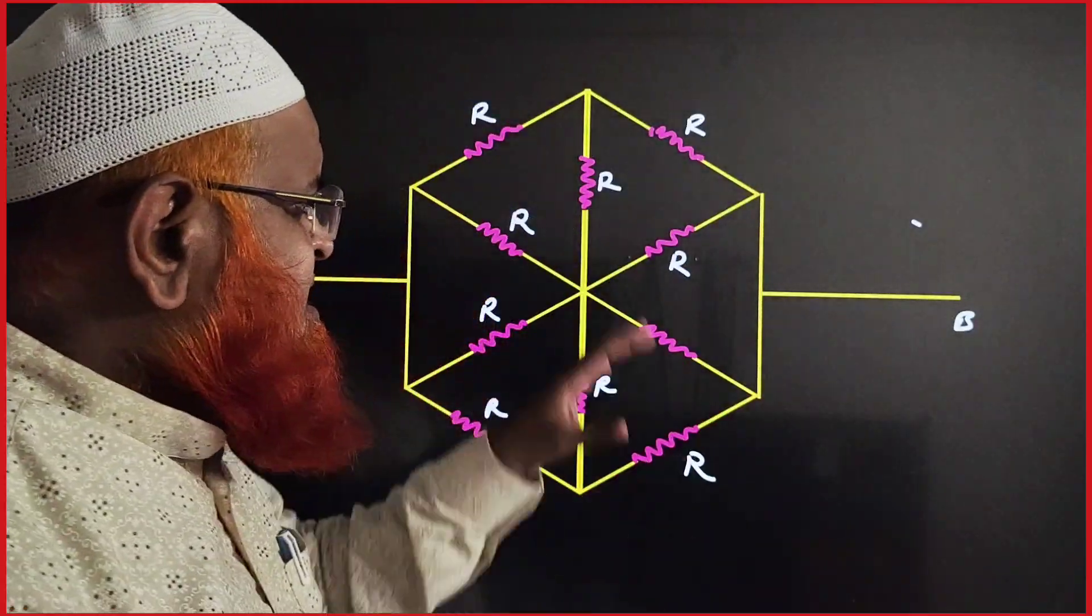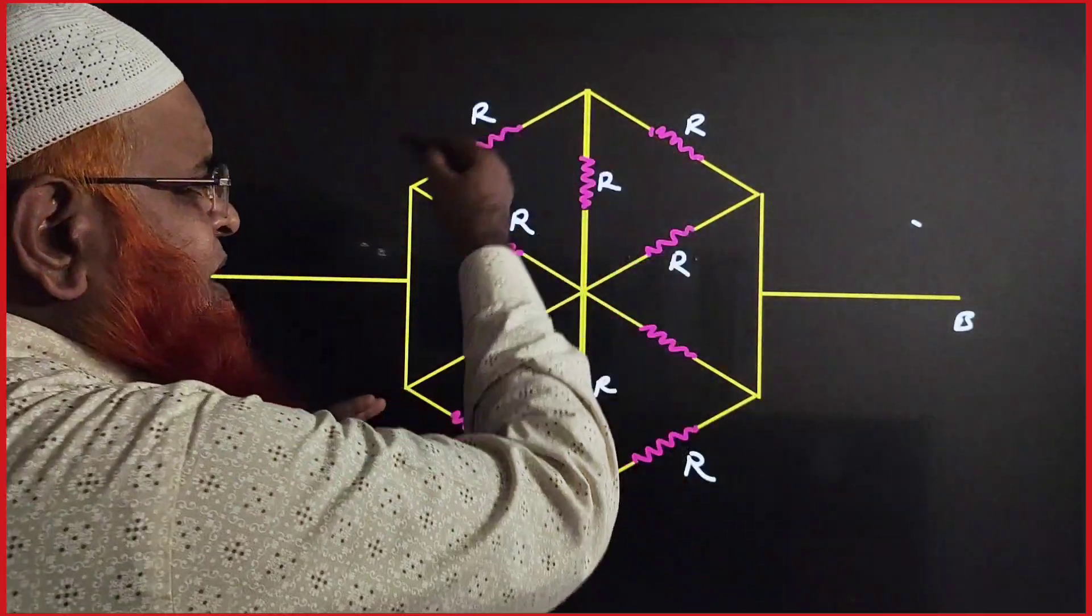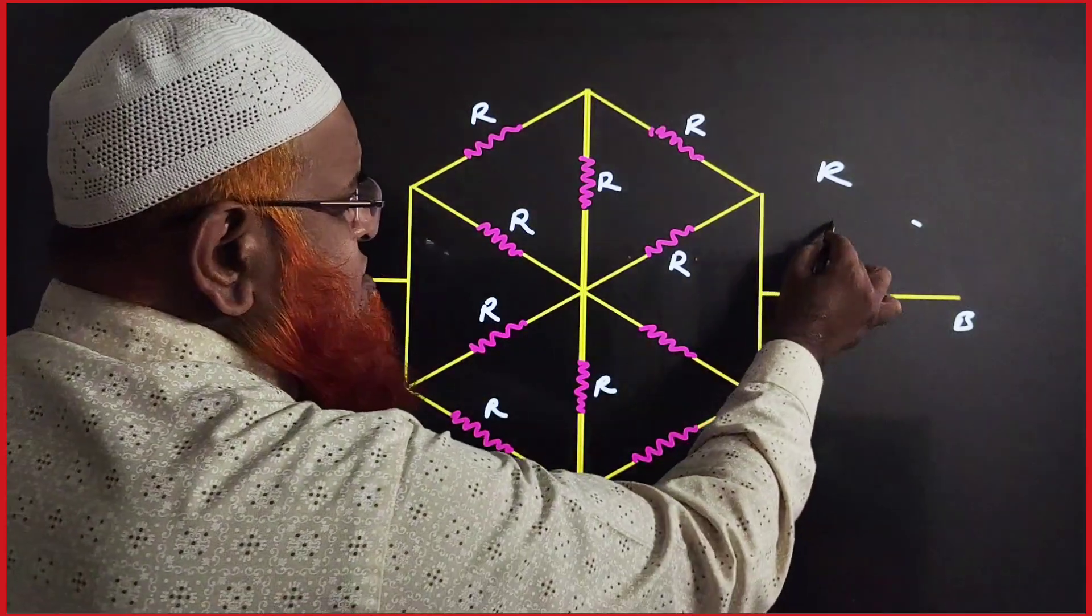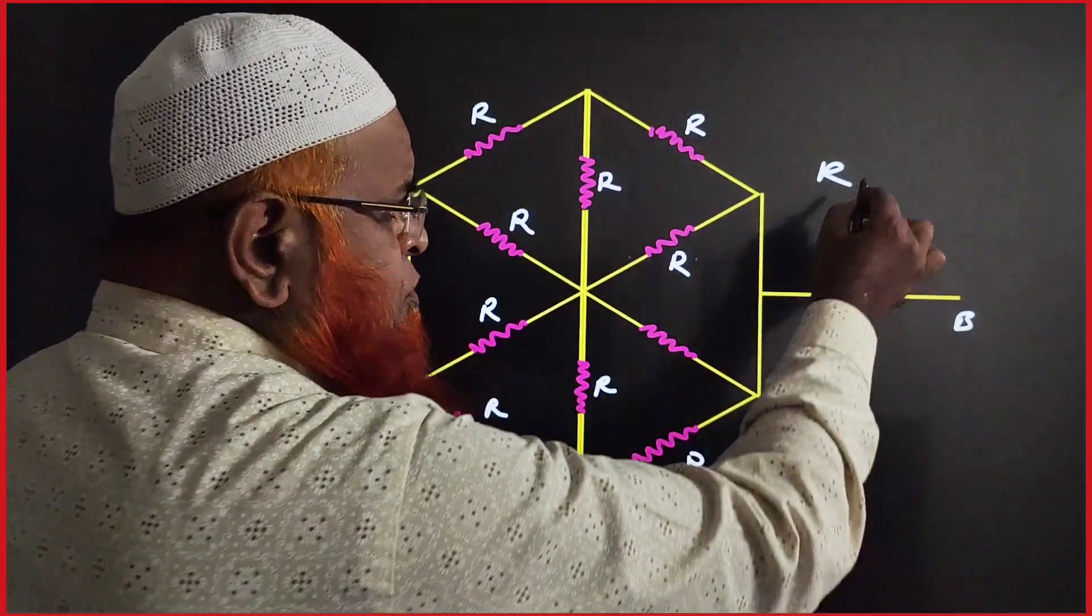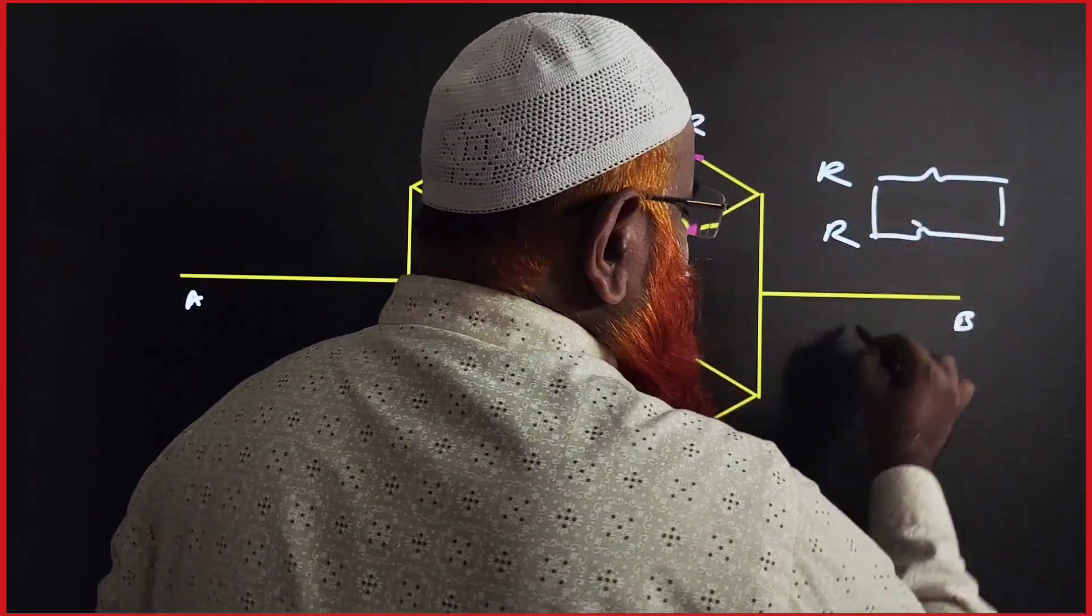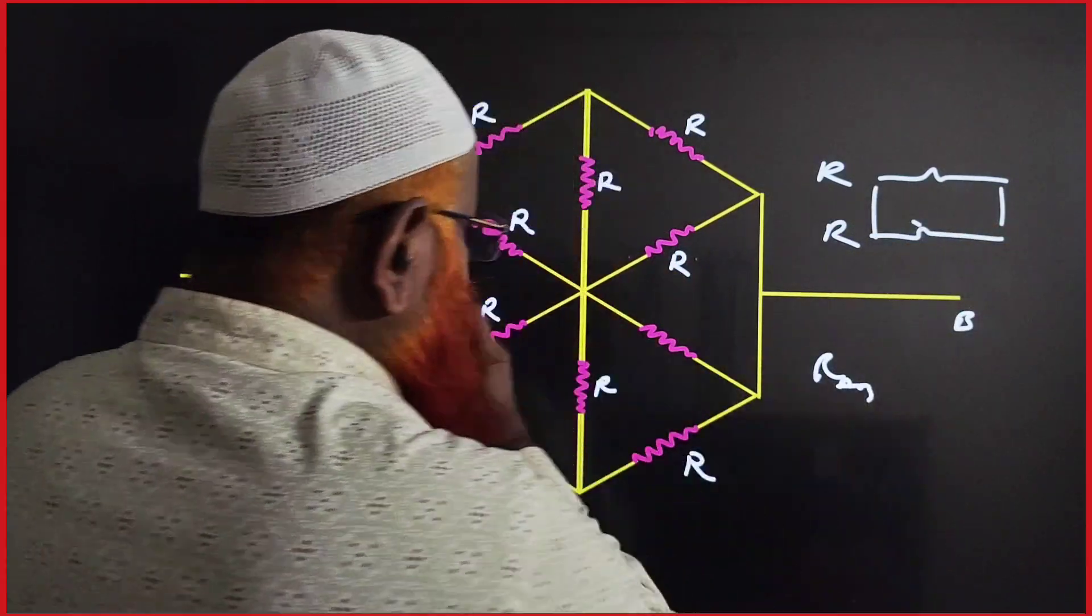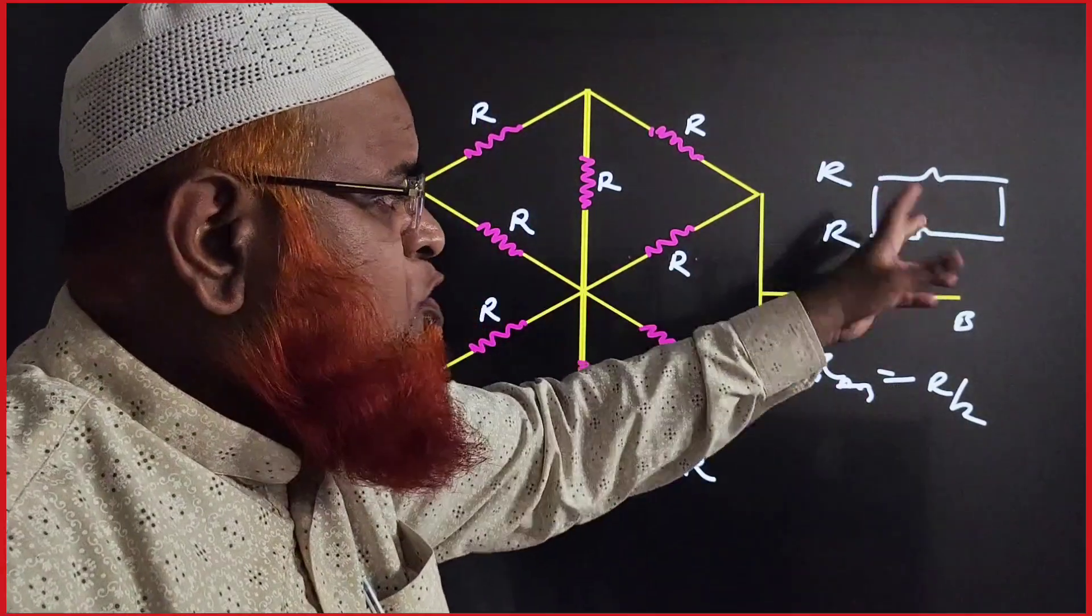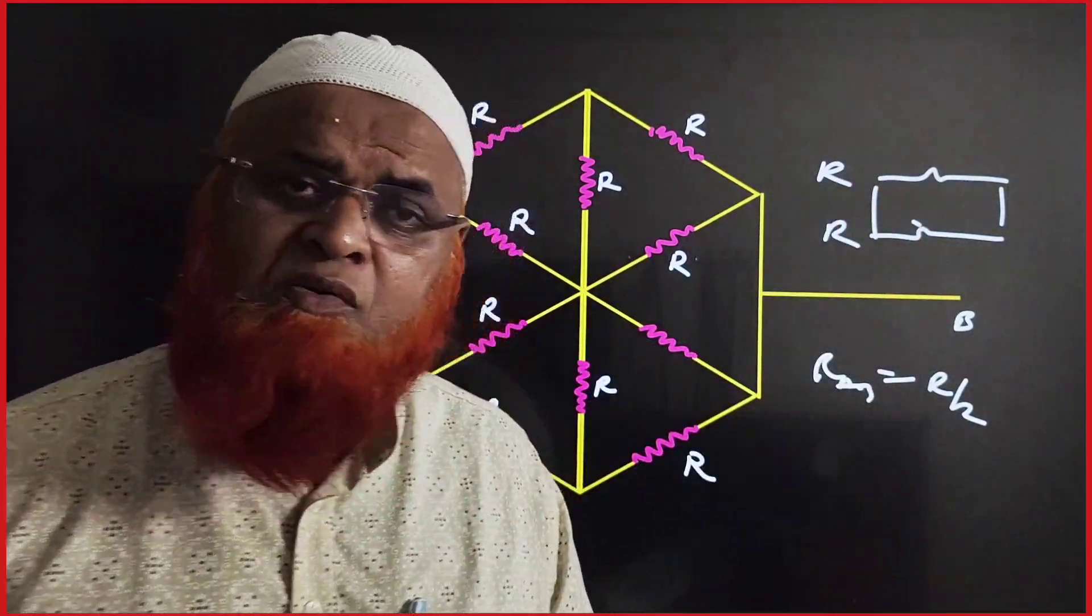Let us go for the next case. This is a double Wheatstone bridge. Upper Wheatstone bridge is having resistance R. Lower Wheatstone bridge is also having resistance R, and both are parallel here. When both are parallel, resistance across AB is going to be R by 2. That means R1 R2 by R1 plus R2 is nothing but R by 2.